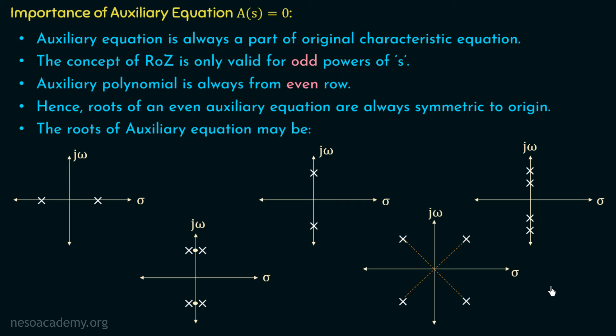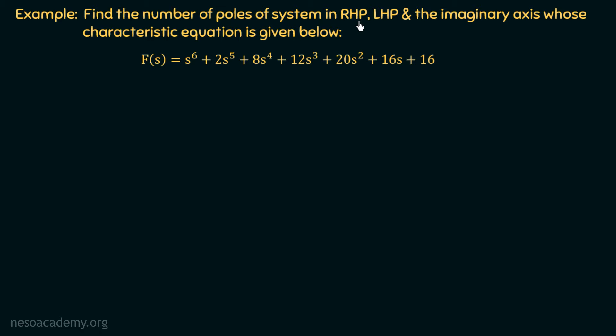Let us now take one example to understand special case 2 of RH criteria better. Find the number of poles in the RHP, LHP, and on the imaginary axis whose characteristic equation is: f(s) = s^6 + 2s^5 + 8s^4 + 12s^3 + 20s^2 + 16s + 16.